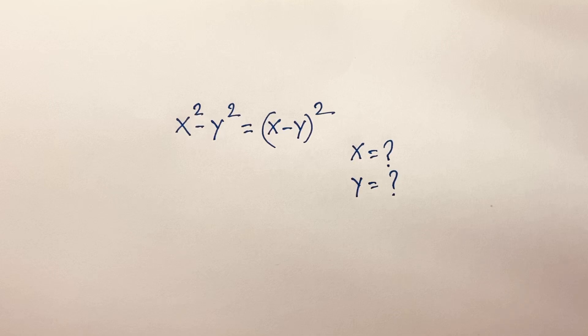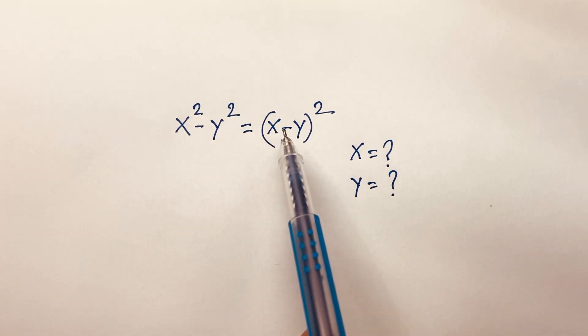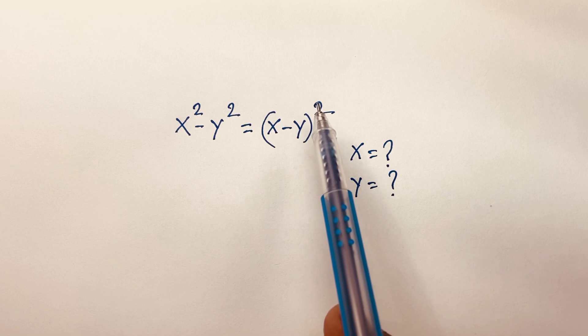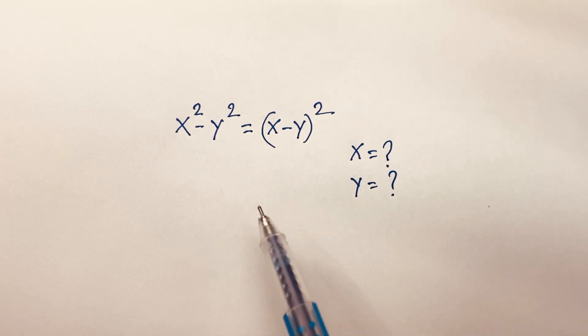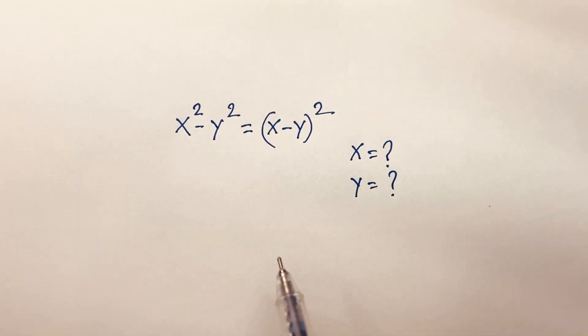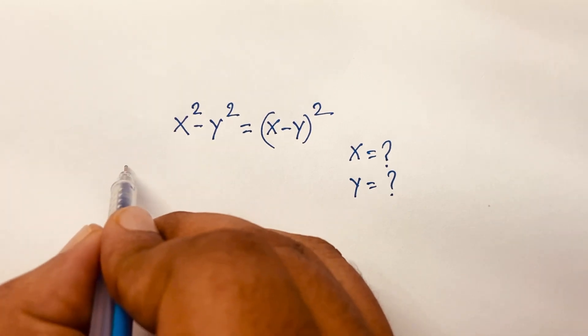How to solve this math Olympiad question: x squared minus y squared is equal to (x minus y) whole to the power 2. We'll find out the value of x and y.